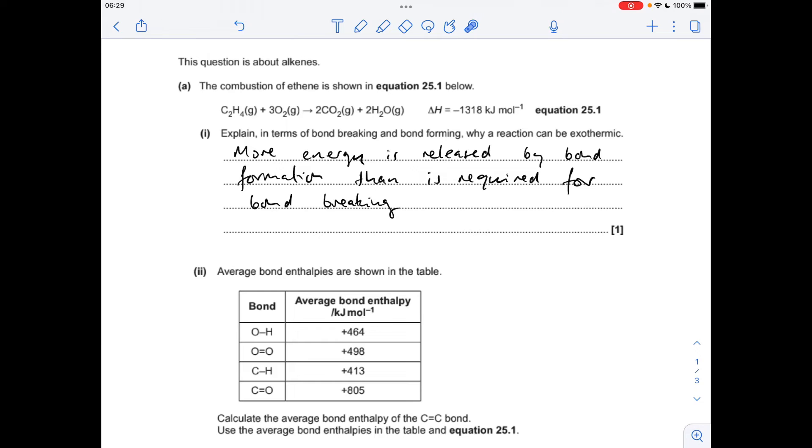Okay, so for part A, in terms of bond breaking and bond forming, why can a reaction be exothermic? That's because more energy is released - remember bond formation is an exothermic process - so more energy is released by bond formation than is required for bond breaking. Remember bond breaking is an endothermic process.